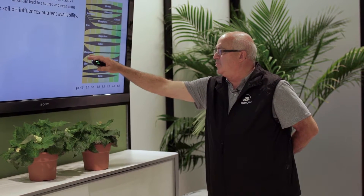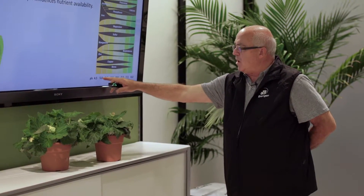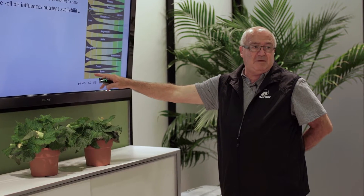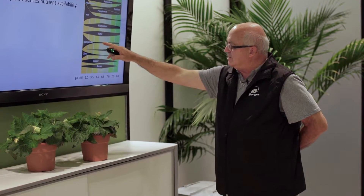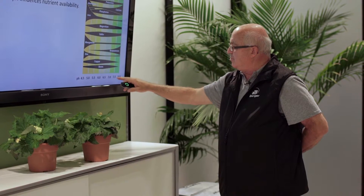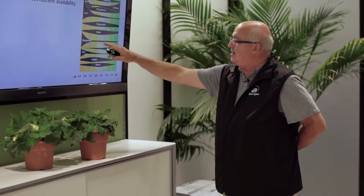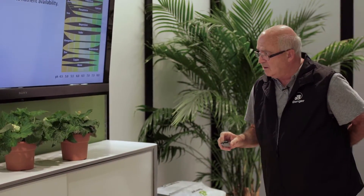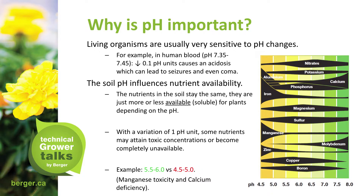The very broad portion of the chart shows where the highest amount of a given element may be available. For example, manganese — as the pH gets up into 7.5 and 8, the actual availability is quite limited. The uptake is being antagonized by the pH level. The nutrients in the soil stay the same; they are just more or less soluble for plants depending on the pH.